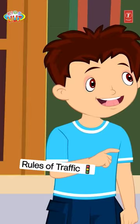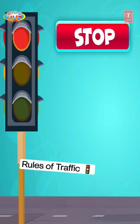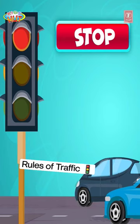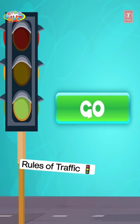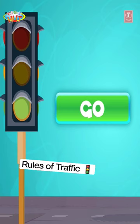Well, red means stop. When the signal turns red, all the vehicles have to stop. The green light means go. Only when the signal turns green, vehicles are free to move ahead. Yellow means that the vehicles on the road must slow down.